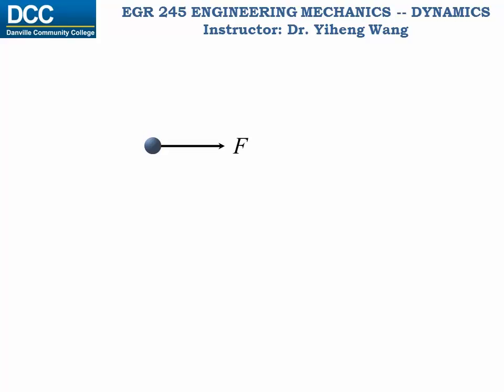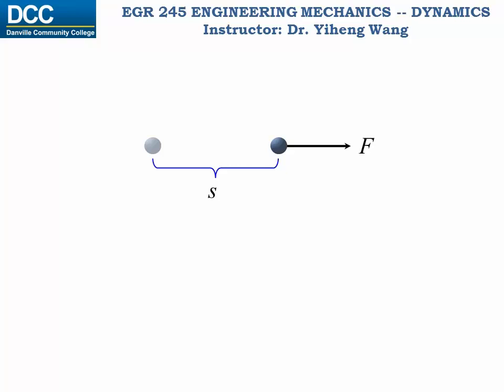Let's first look at a simple scenario. If a particle is subjected to a constant force F, and under this force the particle has moved along the direction of the force for a displacement of S, then the work done by this force to this particle simply equals to F multiplied by S.